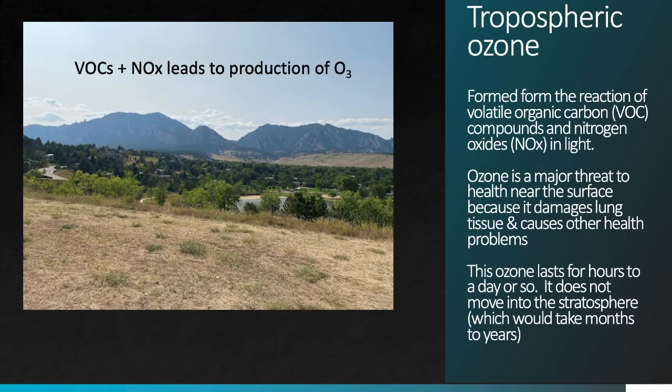Let's review the problem with tropospheric ozone. Although the reactions that produce tropospheric ozone are really complex, the basic idea is that volatile organic carbons plus nitrogen oxides react in the presence of light to produce ozone. Ozone is a major threat to health near the surface of the Earth. Importantly, that ozone will last in the troposphere for only a few hours to a day or so — not nearly long enough for this low-level atmospheric ozone to move up into the higher levels of the atmosphere where it could become stratospheric ozone. This just never happens.